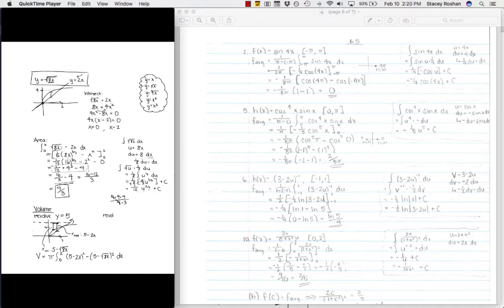So the volume is going to be pi integral from 0 to 2 because these are dx slices. The radius outer, 5 minus 2x squared minus 5 minus root 8x squared dx. And I'm done. That's how I set it up. Now let's do the same thing except let's revolve around y equals negative 5. I'm going from the curve down. The radius outer is going to be root 8x plus 5. This is going to be 2x plus 5. So my volume here is going to be pi, again, from 0 to 2 because those are my bounds.